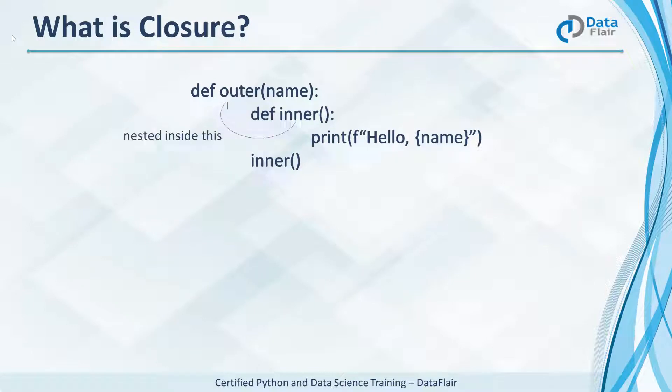The inner function prints a greeting and the outer function makes a call to the inner function. The outer function takes one argument and the inner function doesn't take any. When we make a call to the outer function with the argument Ayushi, the inner function prints hello Ayushi.